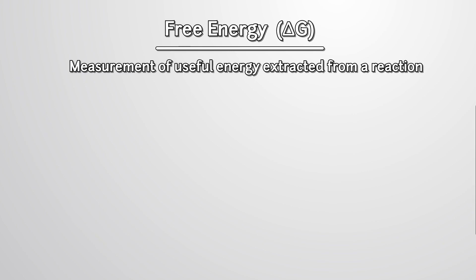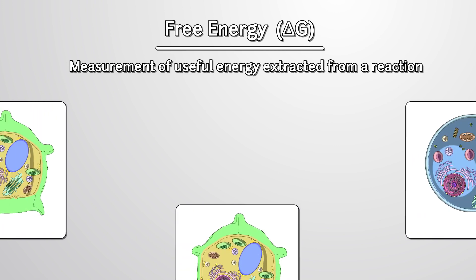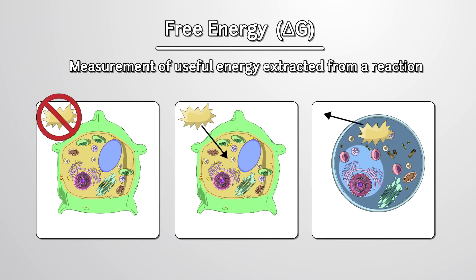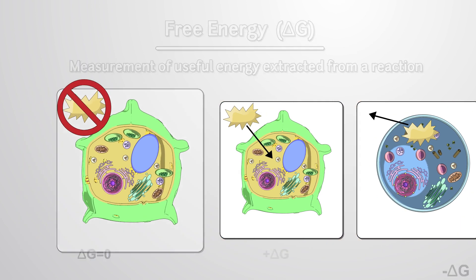Free energy, abbreviated as G for the scientist Gibbs who discovered it, is a measurement of useful energy that can be extracted from a reaction to do work. Depending on the direction of energy in the system, reactions can be considered endergonic, exergonic, or at equilibrium.